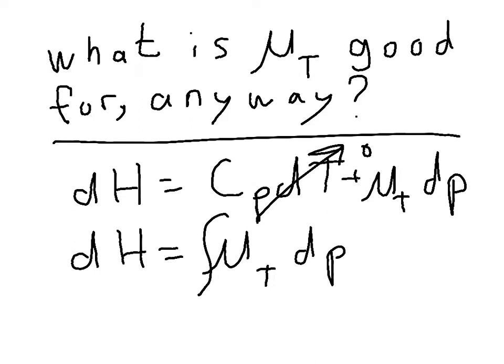So if we increase the pressure from one pressure to another pressure, that can show us how the enthalpy is going to change. And so if we integrate that, we get delta H is the integral going from P1 to P2 of mu T dP.